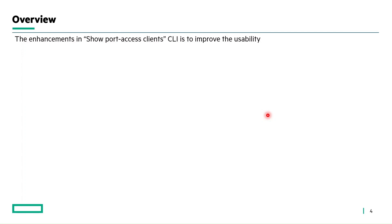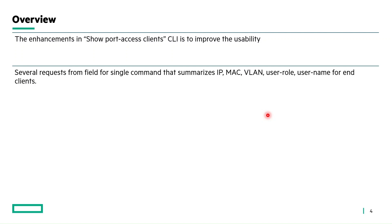Let's see the overview of this feature. This feature is a usability improvement in the show port access client show command. There have been several requests from the field for a single show command that summarizes the client IP, client MAC, client VLAN, user role, and username. That was the reason this enhancement came in 10.12.